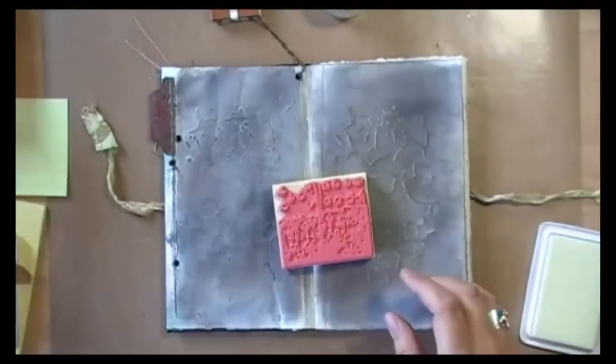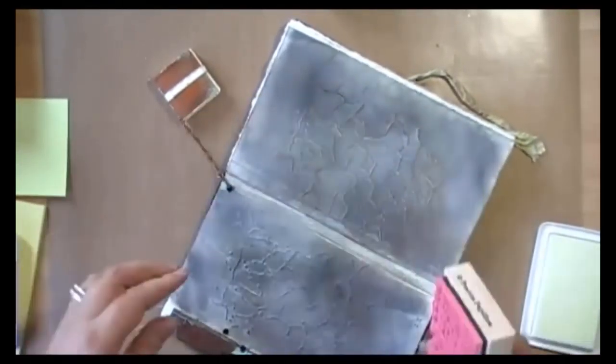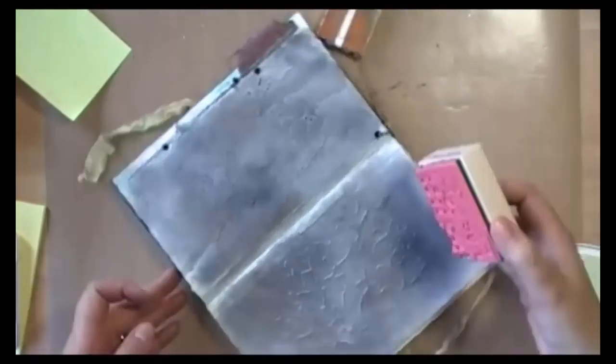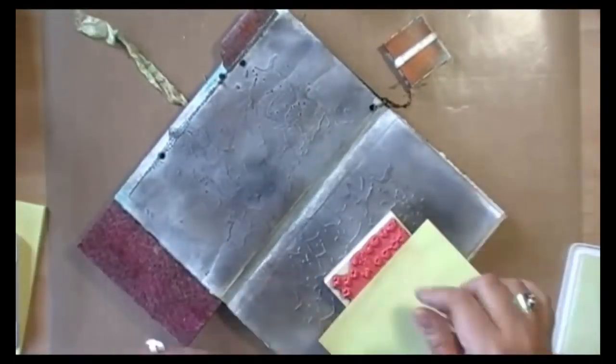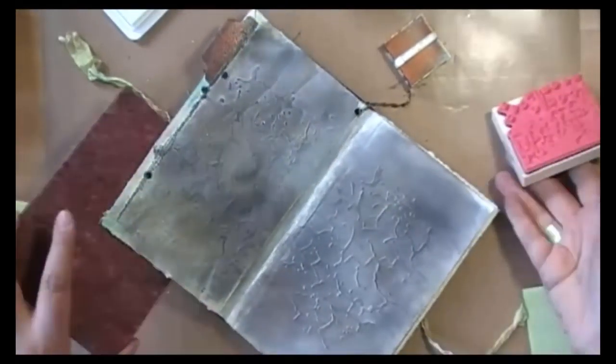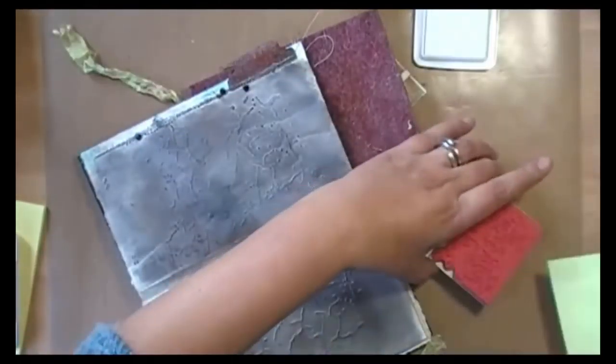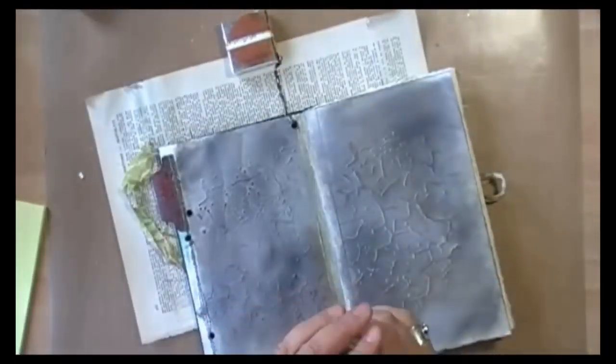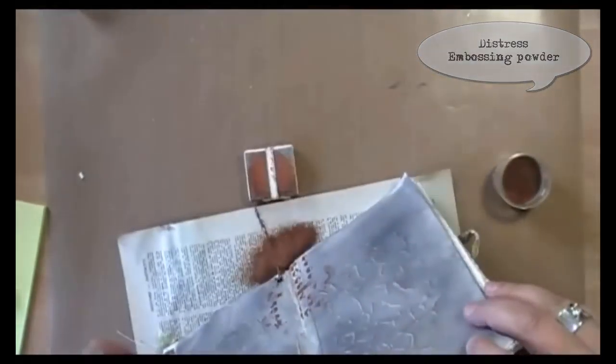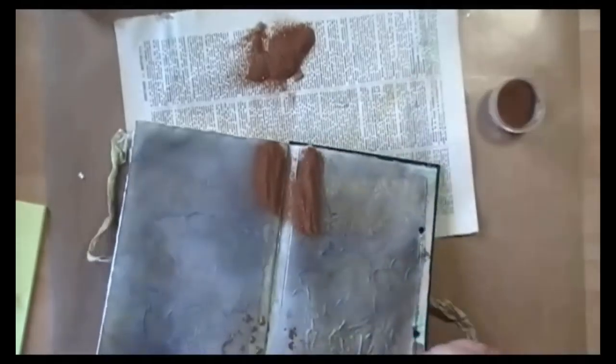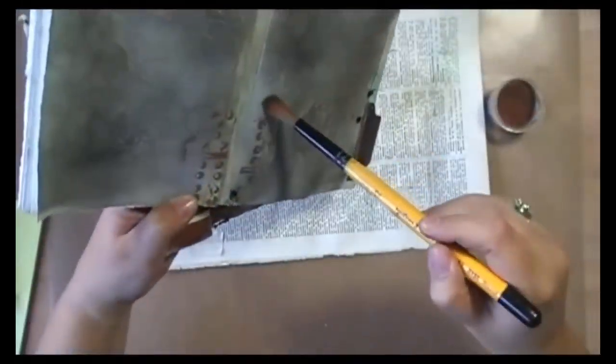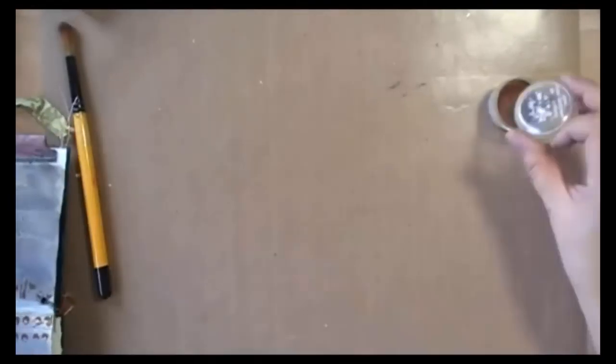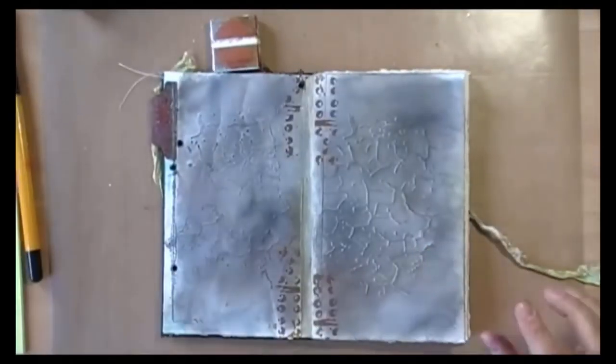This is one of my new stamps that I designed for Stampatique. And I'm stamping it using embossing ink, as I want to add some embossing powder. I want to make those two pages look like they're hinged to one another. And now I can spread my embossing powder on top of it. Using a soft paint brush to take the excess powder away, as I don't want it to melt just randomly on my paper.